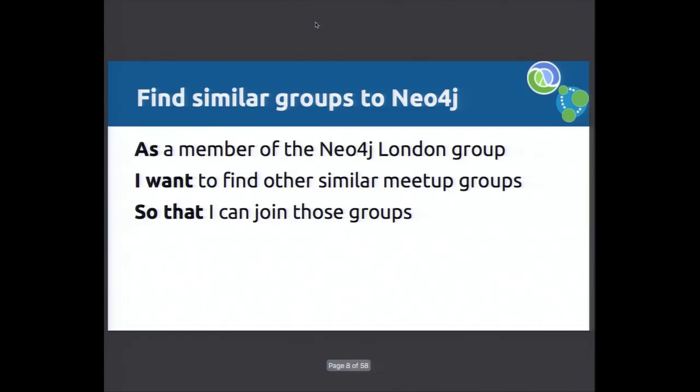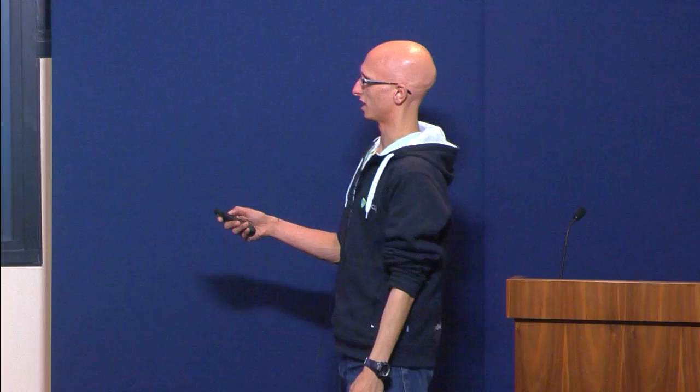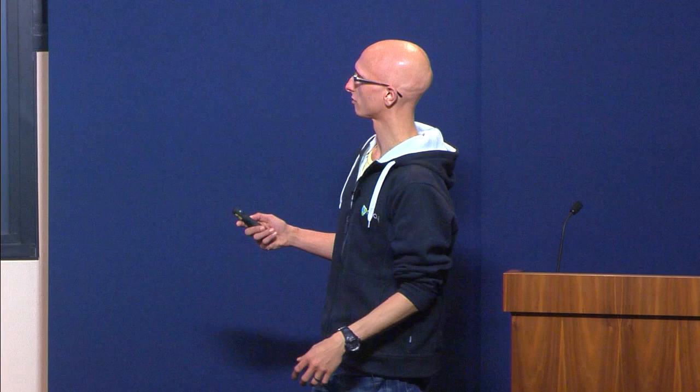I'm going to drive it down from a simple question and go through the whole workflow of how you might do this using Neo. Generally what we see is people combining Neo with something else, but in these examples I'll just use Neo on its own for simplicity. So here we're going to do: as a member of the Neo4j London group, I want to find other groups similar to that — and the idea would be they have events I want to attend. The first thing we've got to work out is what makes groups similar.